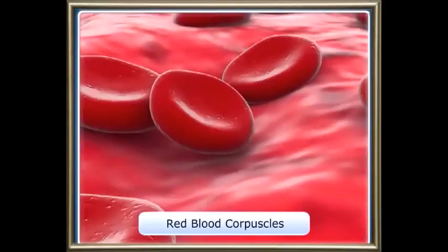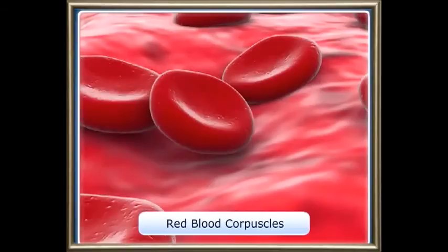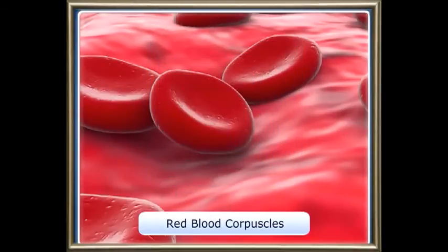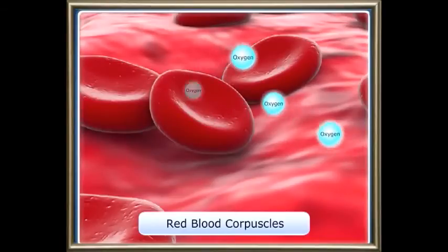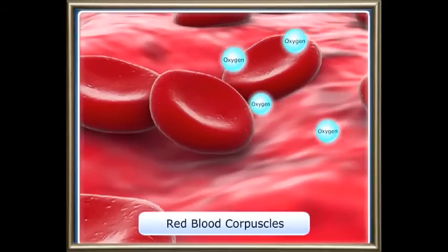Red blood corpuscles, white blood corpuscles, and blood platelets. Red blood corpuscles, or RBCs, are round in shape and constricted in the middle. They contain a pigment called haemoglobin, which gives blood its red colour. RBCs absorb oxygen from the lungs and send it to the cells. Their lifespan is 120 days.